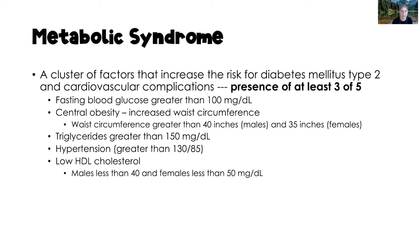Hypertension — anything greater than 130 over 85 is considered pre-hypertension and is a factor for metabolic syndrome. And then having a low HDL: less than 40 in males and less than 50 in females also contributes to this syndrome. If your client has any three of the five of these factors, they receive a diagnosis of metabolic syndrome.